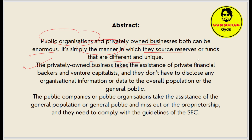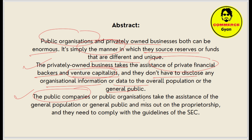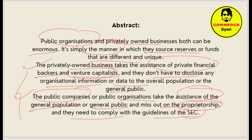A private owned business takes the assistance of private financial bankers and venture capitalists — those who invest mostly in startup businesses or for future growth. They don't have to disclose any organizational information to the general public; their data and organizational functions can be managed secretly. A public company takes the assistance of the general public and must comply with the guidelines of the Securities and Exchange Commission (SEC).